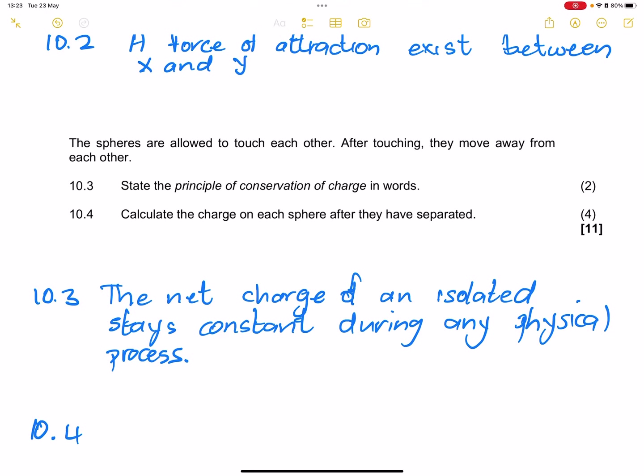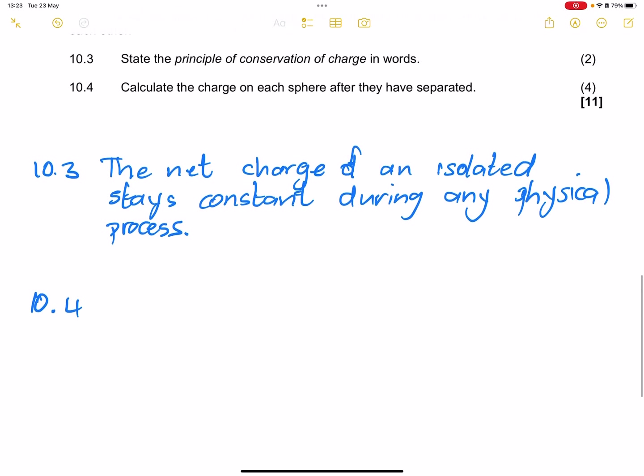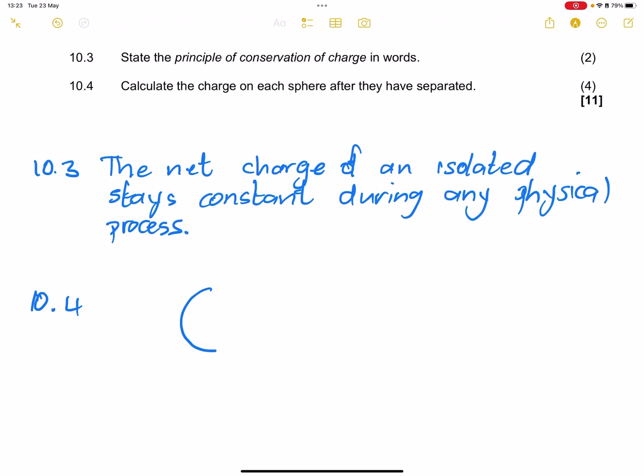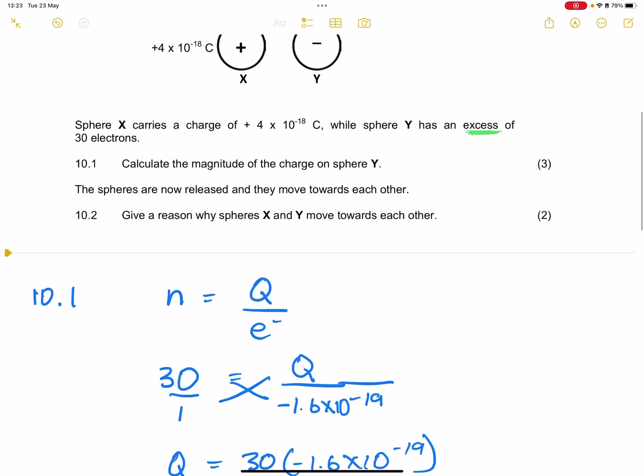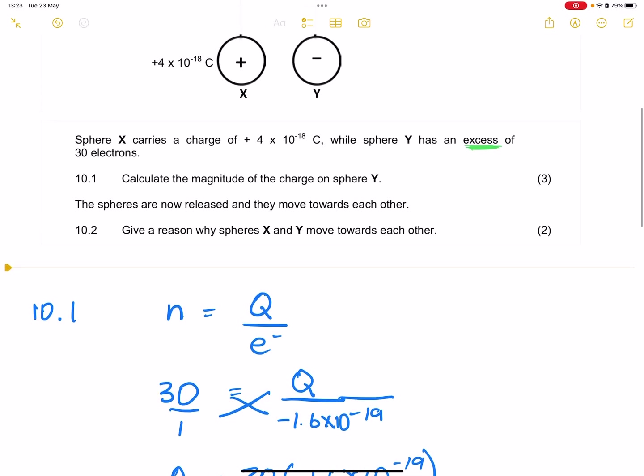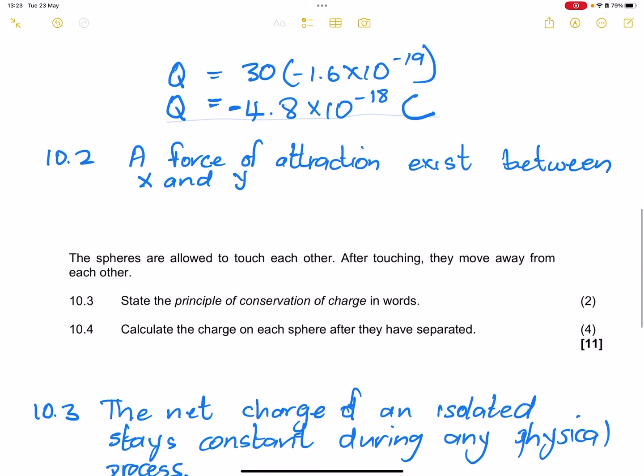Now the next question, they say to us, calculate the charge on each sphere after they have separated. Now remember, the moment that you cause charges to touch each other, so there's X and Y touching each other, what happens? There's a transfer of electrons that will take place up until we get to that point where they will have equal charges. Why? Because we've got equal spheres as well.